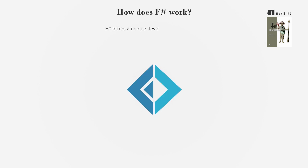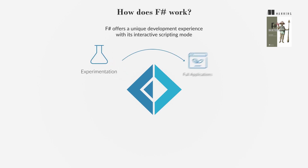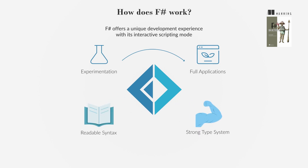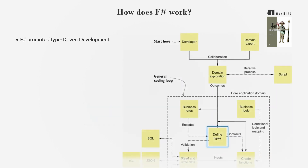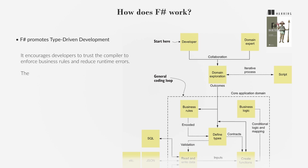F-Sharp offers a unique development experience with its interactive scripting mode, allowing experimentation and seamless transition to full applications. The language's readable syntax and strong type system facilitate collaborative domain modeling with non-technical stakeholders. F-Sharp promotes type-driven development, encouraging developers to trust the compiler to enforce business rules and reduce runtime errors. The language is opinionated, guiding developers to write safer and more efficient code.